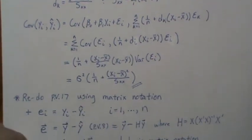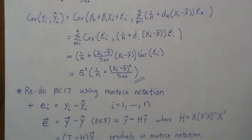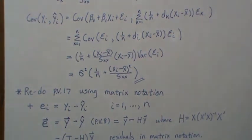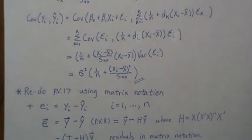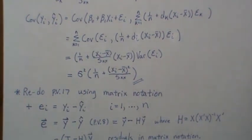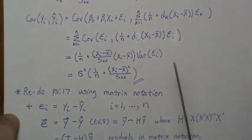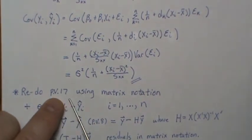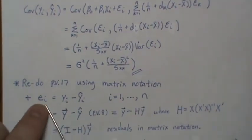Now I want to introduce matrix notation and redo all these calculations — it takes only four to five lines, versus two to three pages in scalar form. I'm going to redo PV17 using matrix notation, which you need to internalize before multiple linear regression.